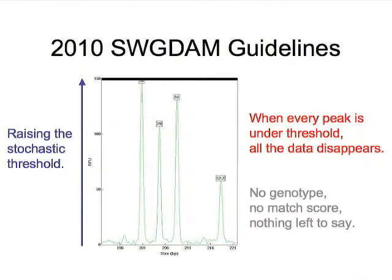That was at a threshold of 50 RFU. When you use stochastic thresholds and raise the level to 150 or 200 RFU, the peaks that are under threshold begin to disappear from your review — as do the criminals you're trying to detect and identify. The result is there's no genotype, no match score, and really nothing left to say to police, prosecutors, or society, because the data is now invisible to the interpretation method. It's there, but you're not seeing it with thresholds.